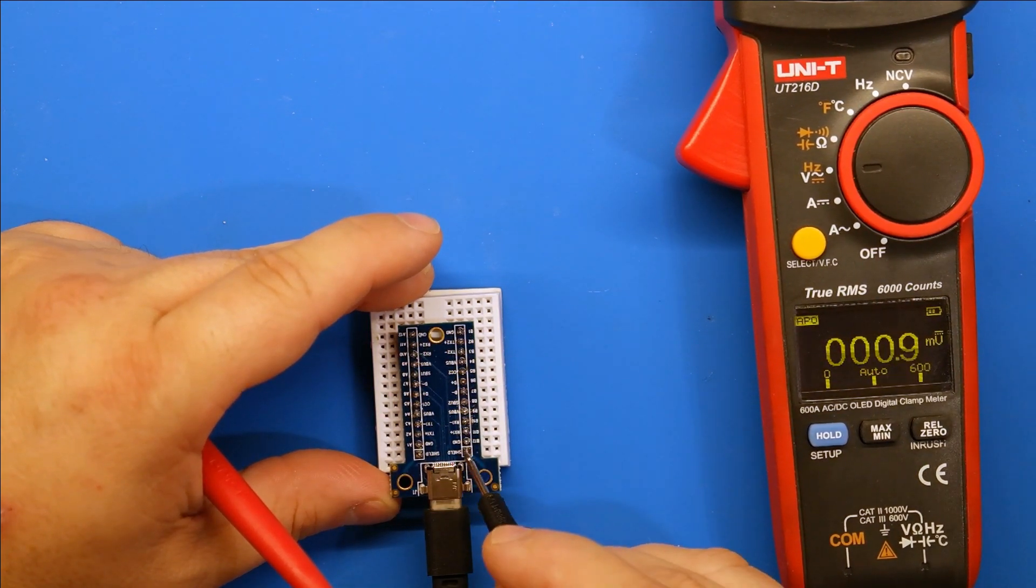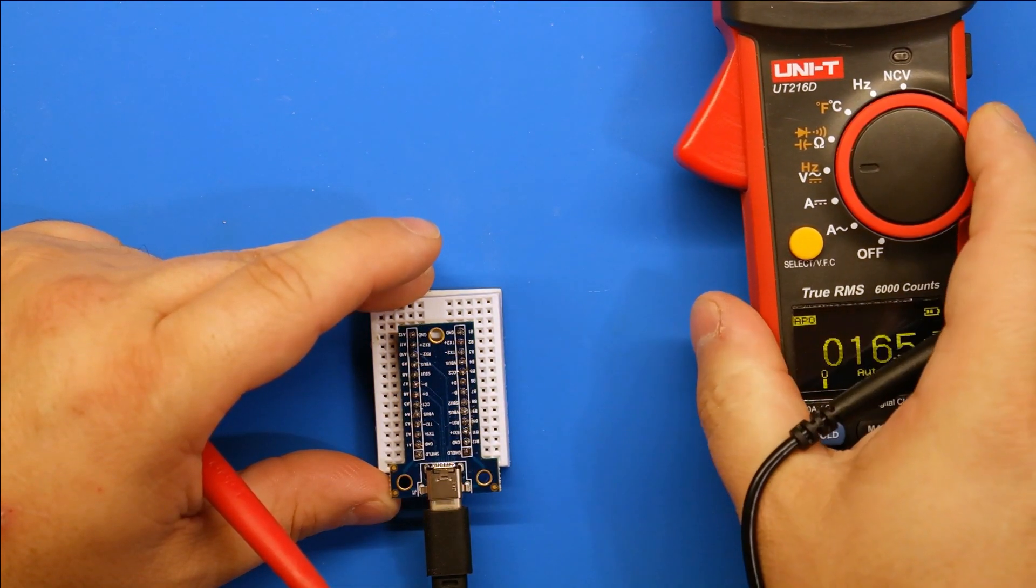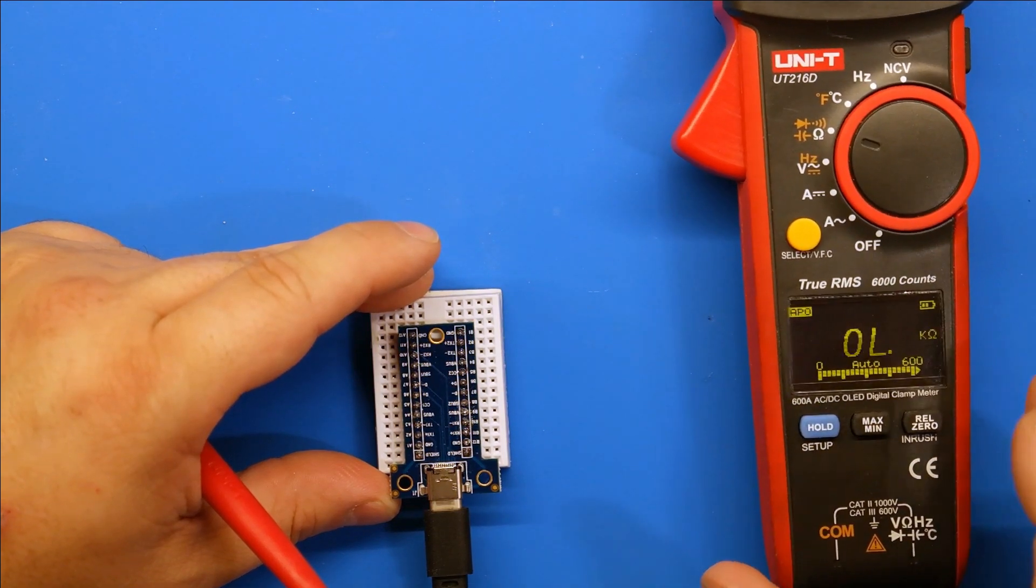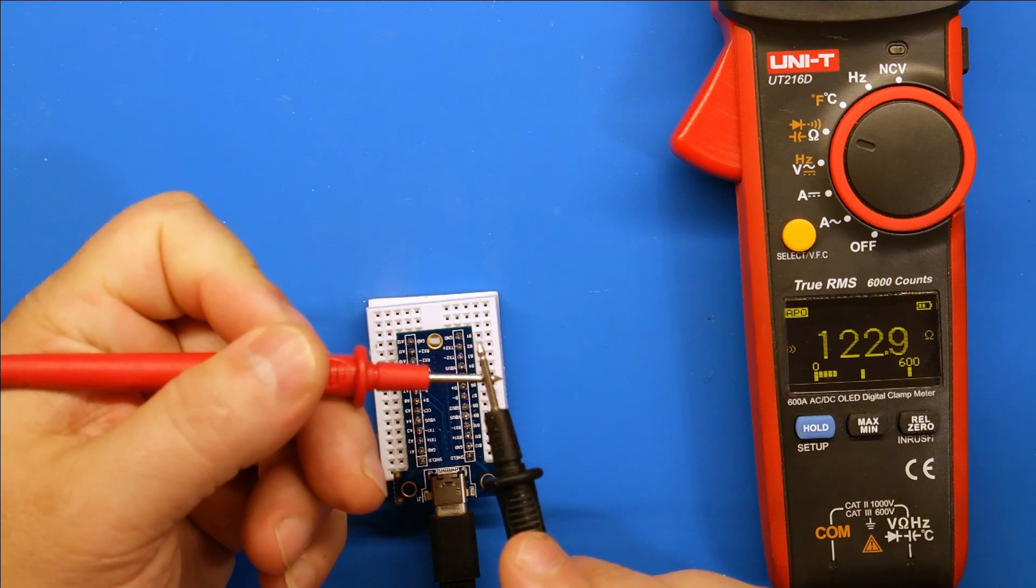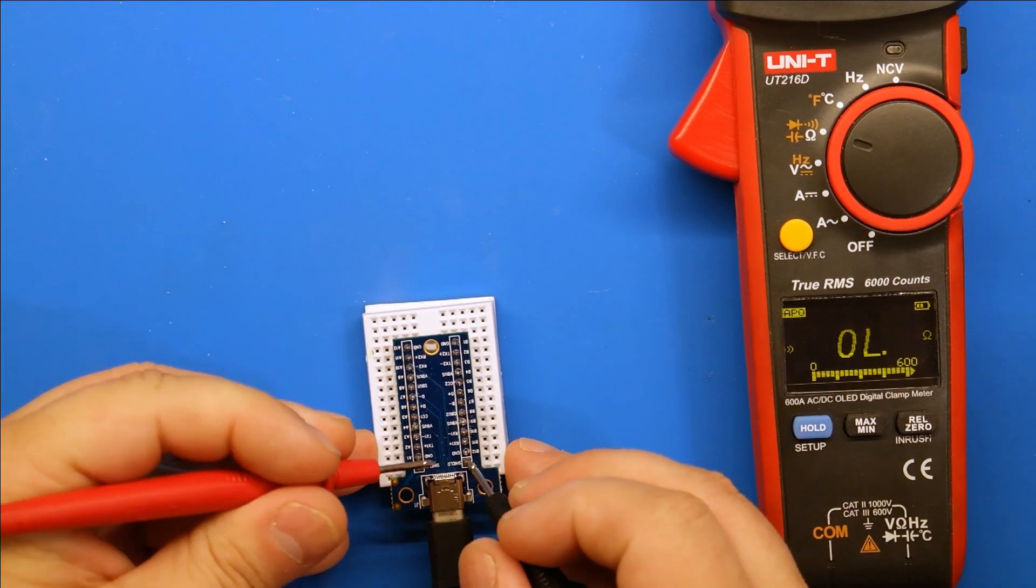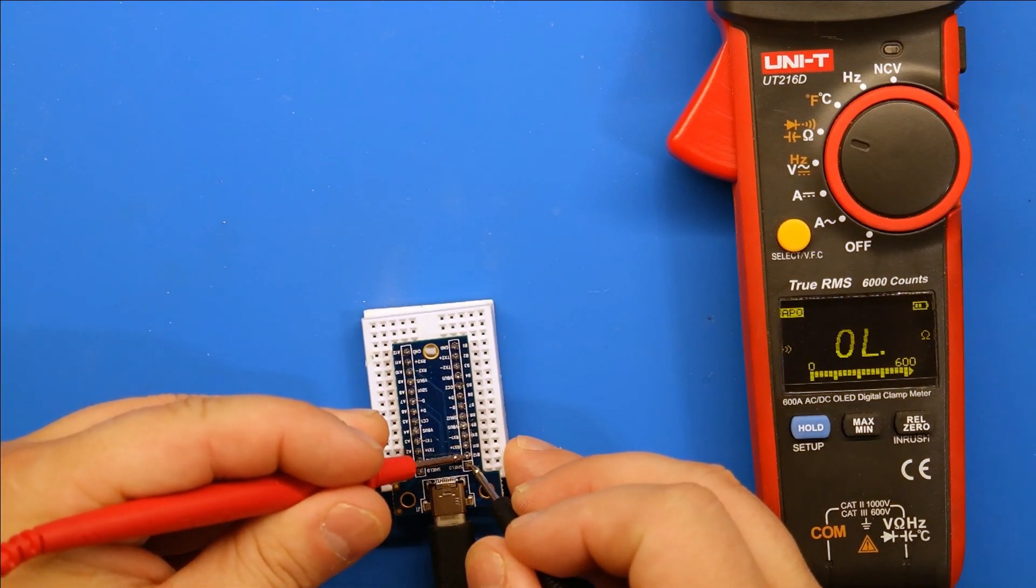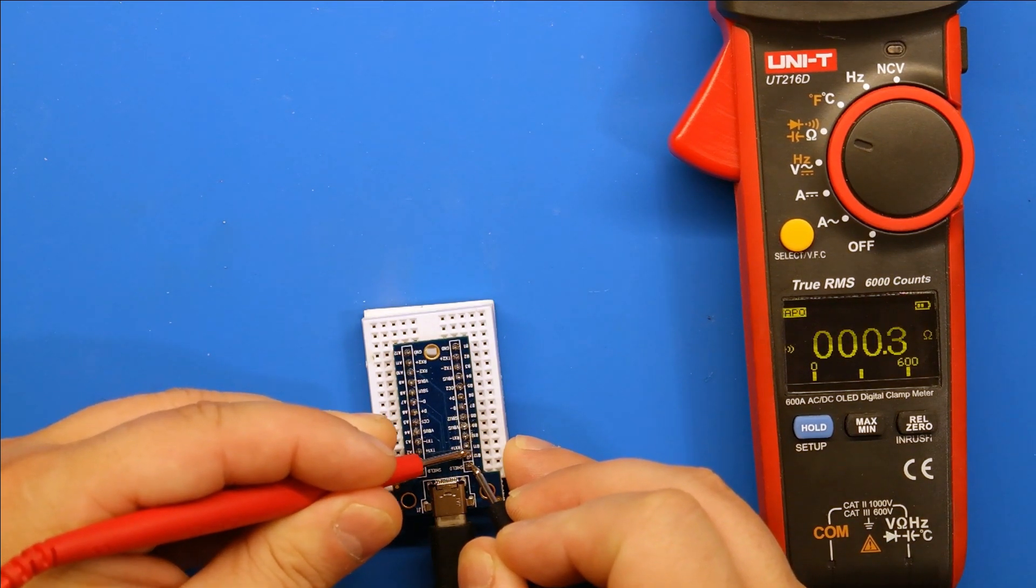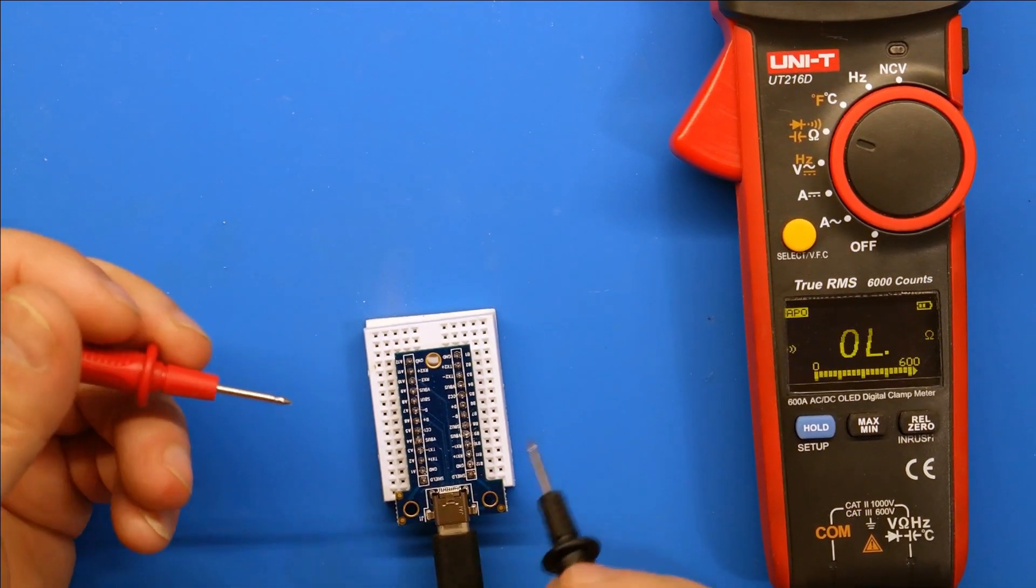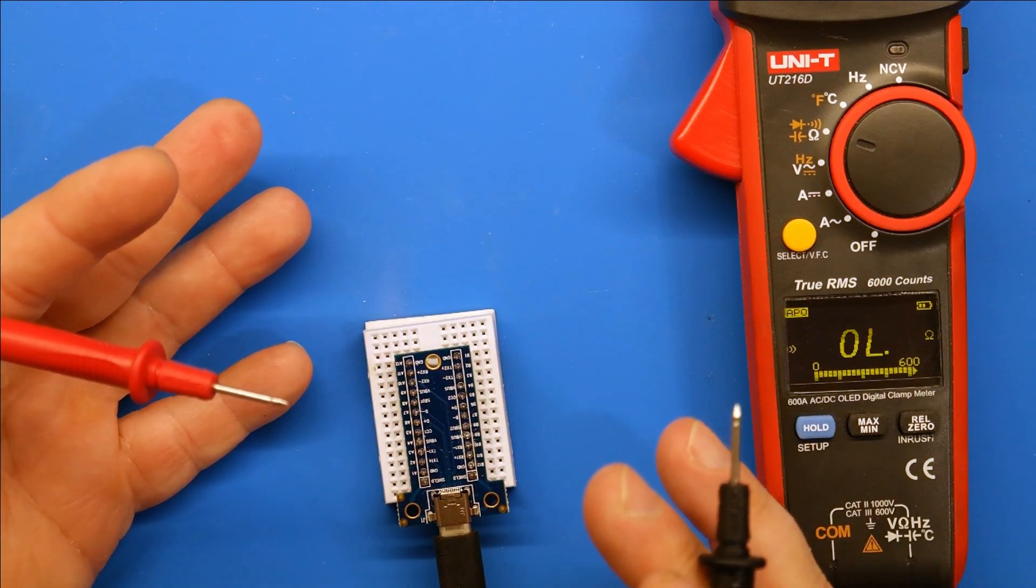And the shield, at least on this board, the shield is actually tied directly to ground. So if we go over to here and test for continuity, if we go shield and ground, you'll see they are electrically connected to each other. So they are the same, but they do give two pins also for the shield.